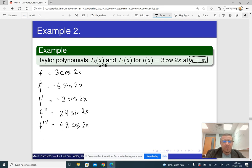sine of a multiple of pi is 0, so we are going to get 0s here. And cosine, every time we are going to have cosine of 2 pi, and cosine of 2 pi is the same as cosine of 0, which is 1. So we are going to have 3 here, minus 12, and 48.